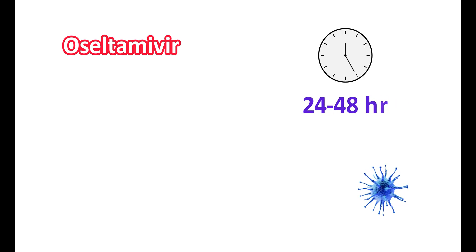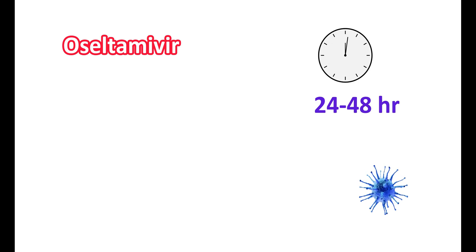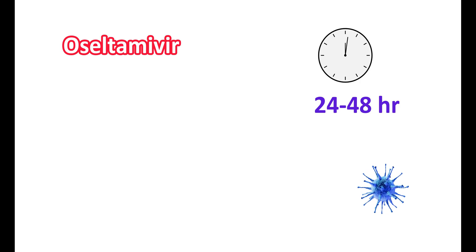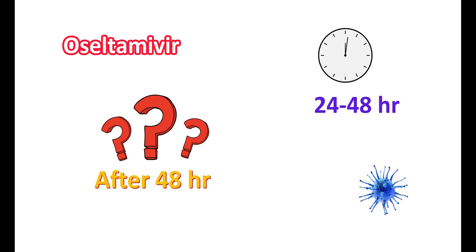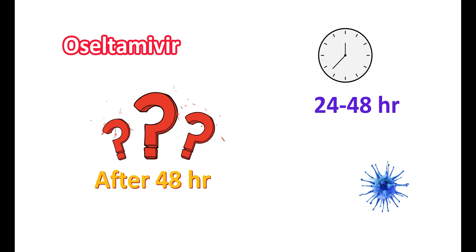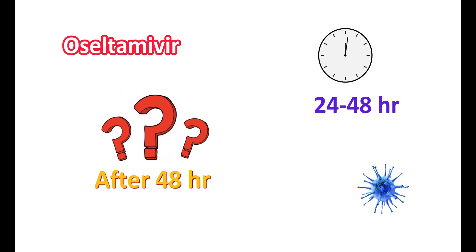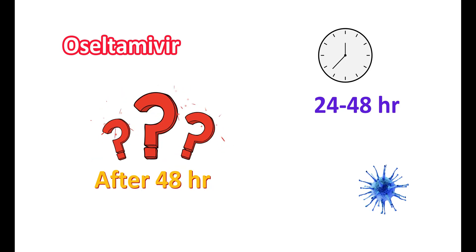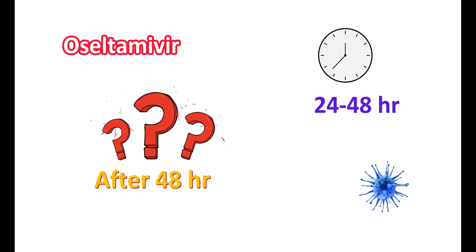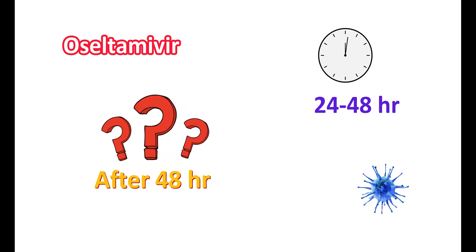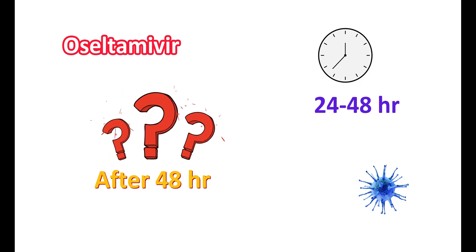Oseltamivir can be given to people with flu virus infection. In order to show better efficacy, it should be given within 24 to 48 hours of onset of symptoms, since the virus replicates significantly within 48 hours. If given after 48 hours, the efficacy of treatment is doubtful, as it may not properly inhibit viral infection. Oseltamivir inhibits the release of new virions, so if given after 48 hours, new virions are already released, which may further increase the viral infection.